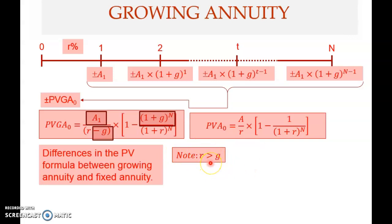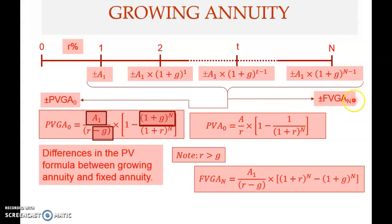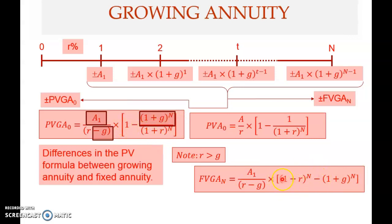You can also determine the future value of a growing annuity. The future value is measured just after the final payment, which is included. The FVGA formula is: A1 ÷ (R − G) × [(1+R)^N − (1+G)^N]. Compared to the PVGA formula, instead of the term [1 − (1+G)^N / (1+R)^N], you use [(1+R)^N − (1+G)^N].